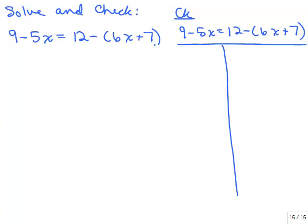We've got parentheses again on the right-hand side. On the left side it's already simplified — a constant term and a variable term — so I can copy that down. But on the right-hand side we need to distribute just the minus sign. You can think of it as multiplying by negative 1; it just changes the signs. So we have minus 6x and minus 7.